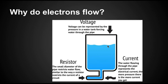Current is the water flowing through the pipe, which represents the electrical current. The more pressure there is, the more current you get. And that's usually represented with electricity with amps.